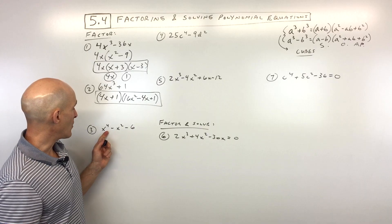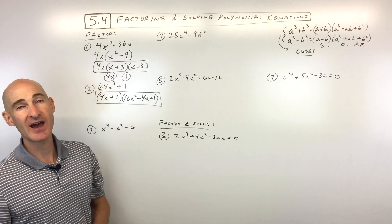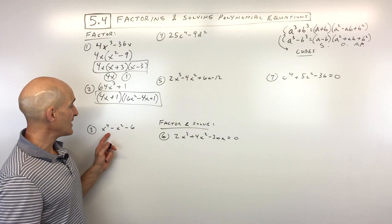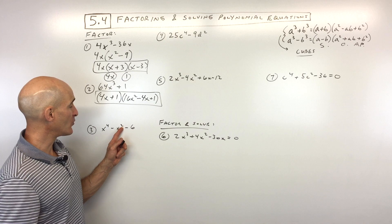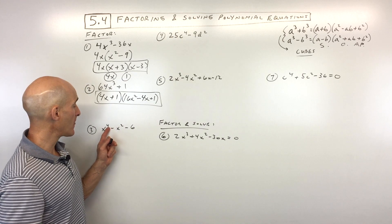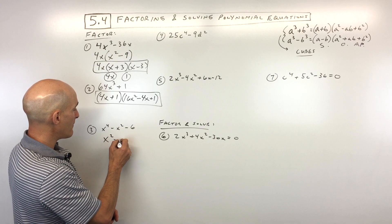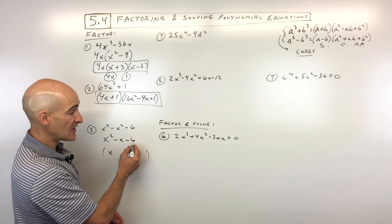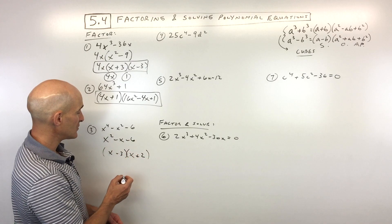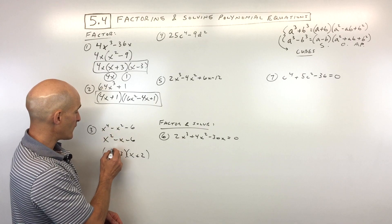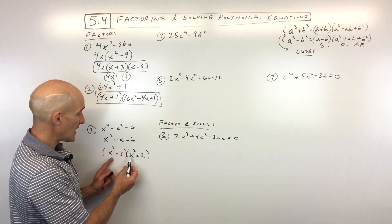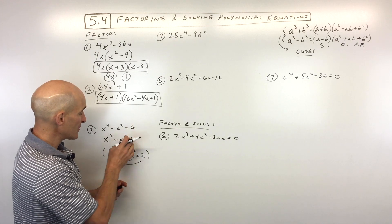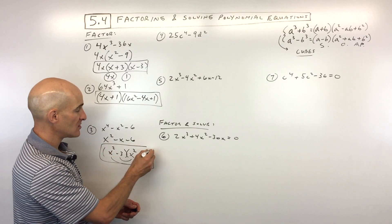Practice problem 3: factor x to the fourth minus x squared minus 6. There's no GCF, but it's a trinomial in quadratic form — the middle exponent 2 is half of the leading exponent 4. Factor just like x squared minus x minus 6: what multiplies to negative 6 but adds to negative 1? That's negative 3 and positive 2. Since we have x to the fourth, both factors use x squared: x squared minus 3 times x squared plus 2.